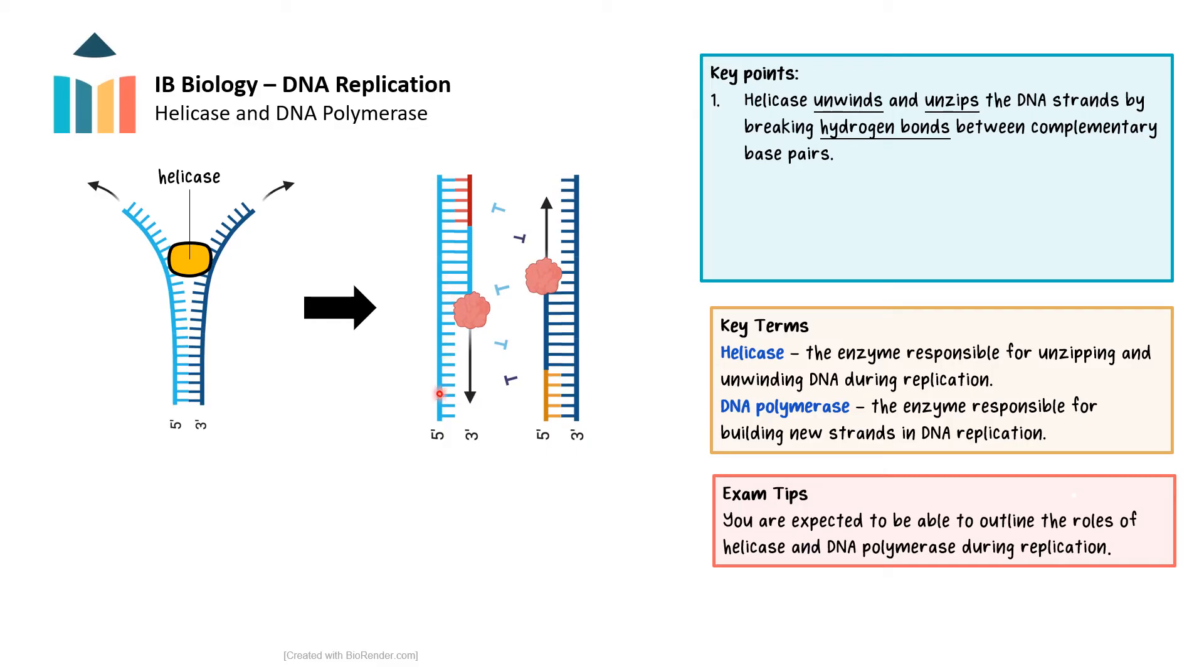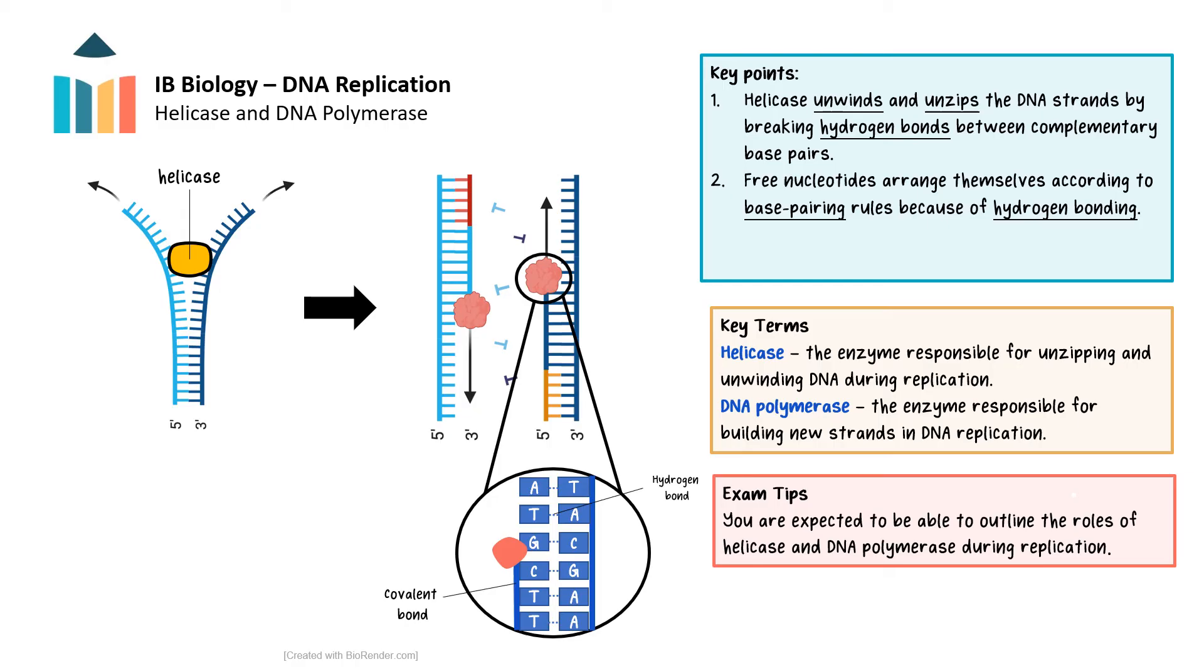Subsequently, free nucleotides, each bearing one of the four nitrogenous bases adenine, cytosine, guanine, or thymine, align with their complementary bases on the separated template strands. This precise base pairing, illustrated in magnified view, facilitates the next step in the process.